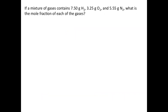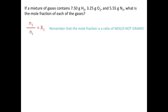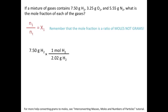Let's look at a problem. If a mixture of gases contains 7.5 grams of hydrogen, 3.25 grams of oxygen, and 5.55 grams of nitrogen, what is the mole fraction of each of these gases? Remember that the mole fraction is a ratio of moles — moles of one gas divided by the total number of moles of all the gases. In order to calculate the mole fraction of each gas, we first need to convert the grams of each gas into moles using the molar mass.